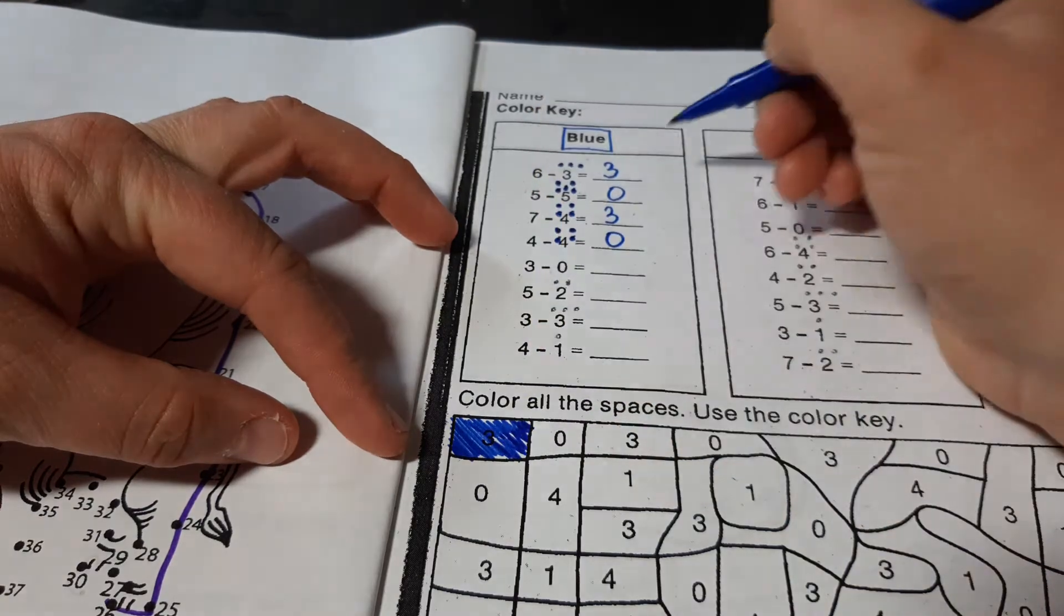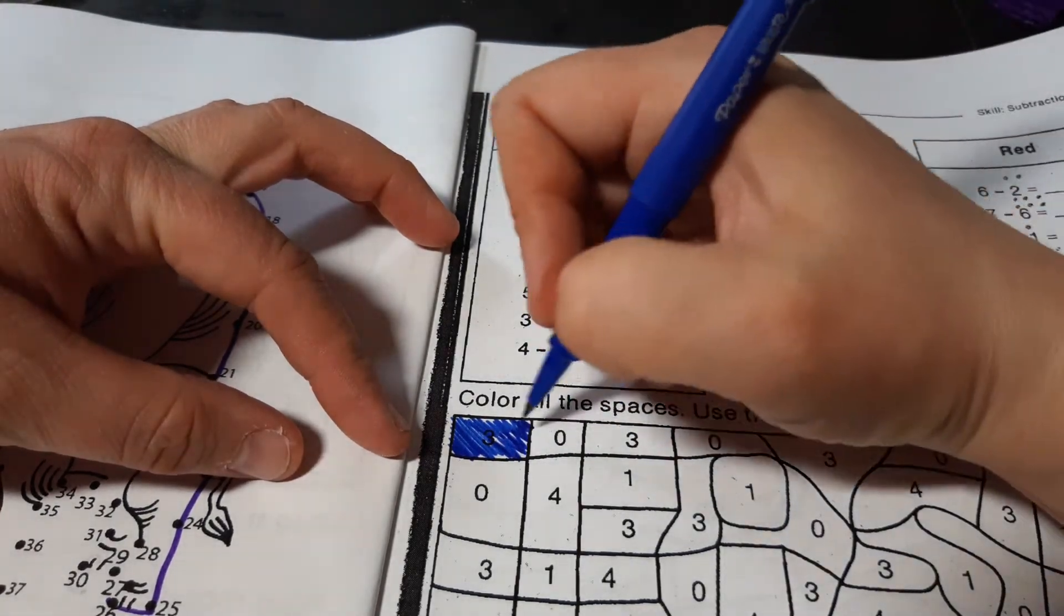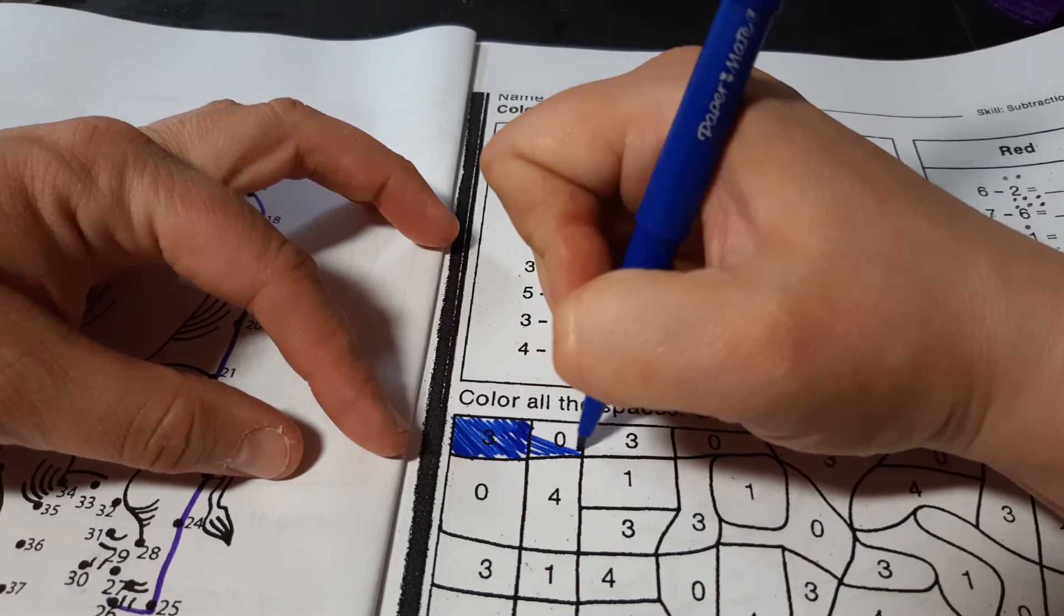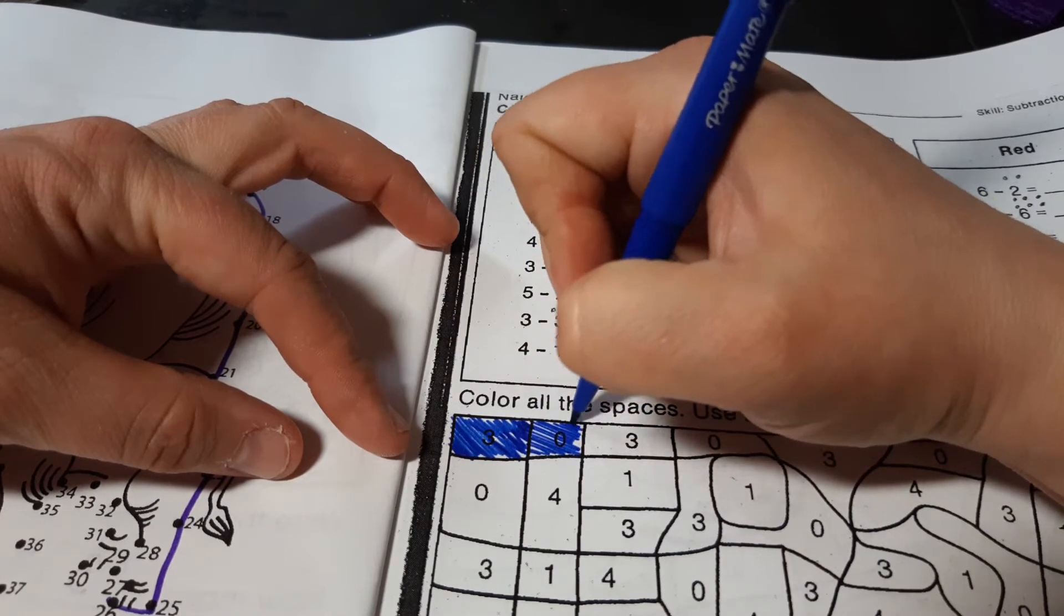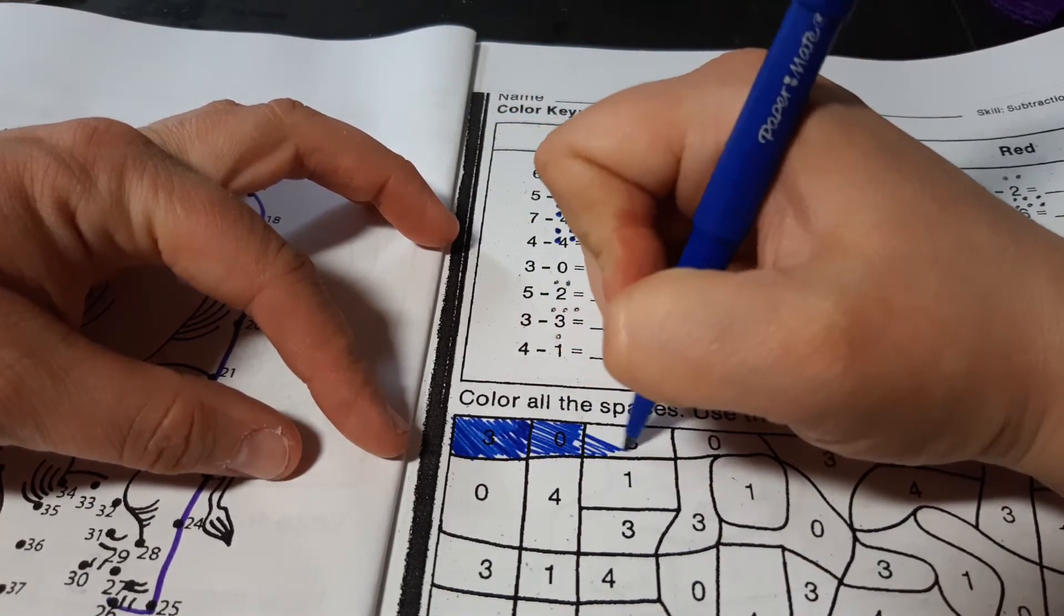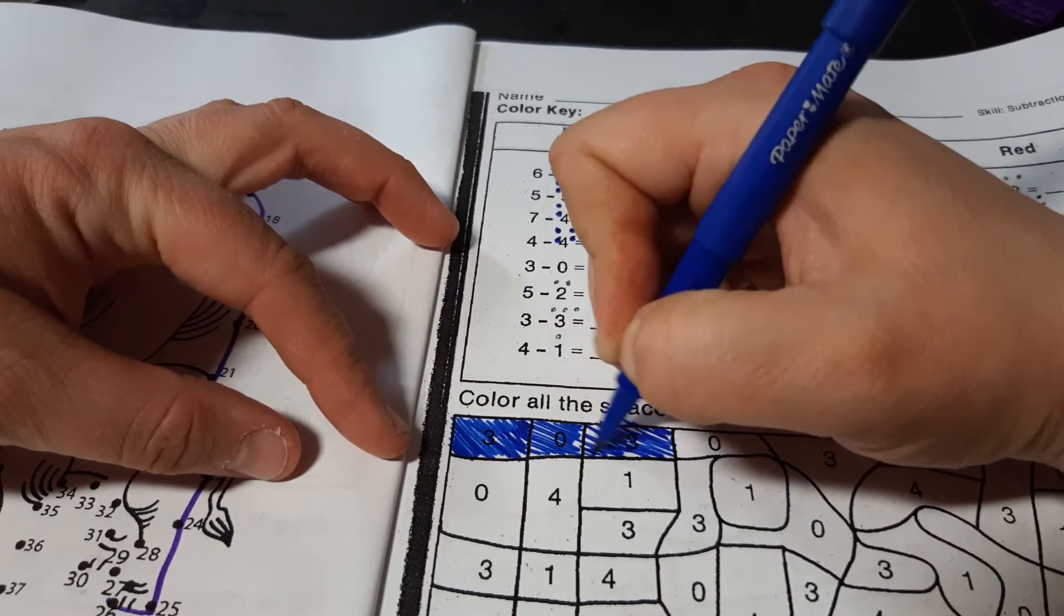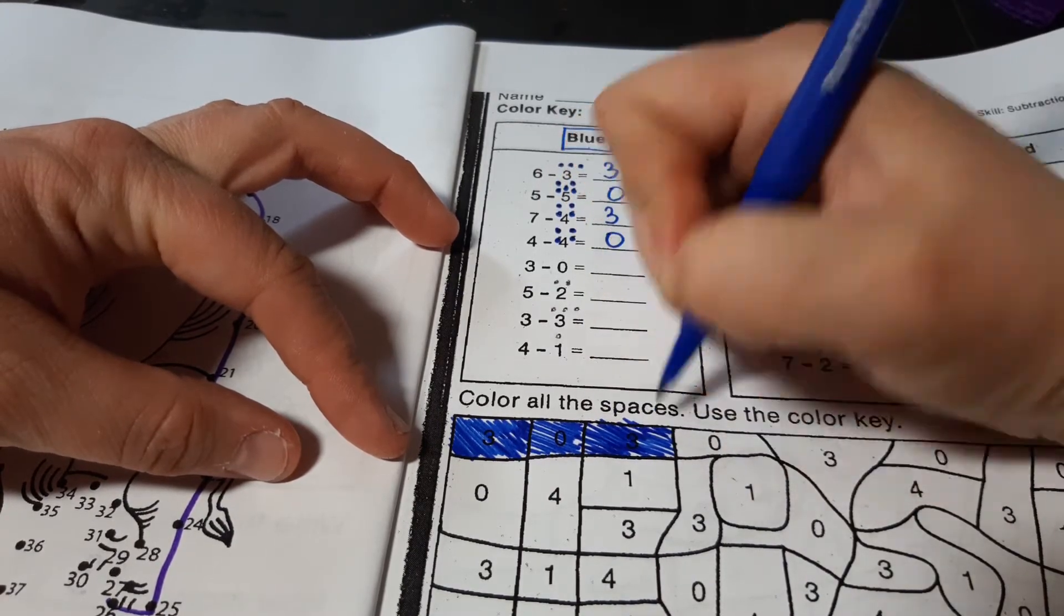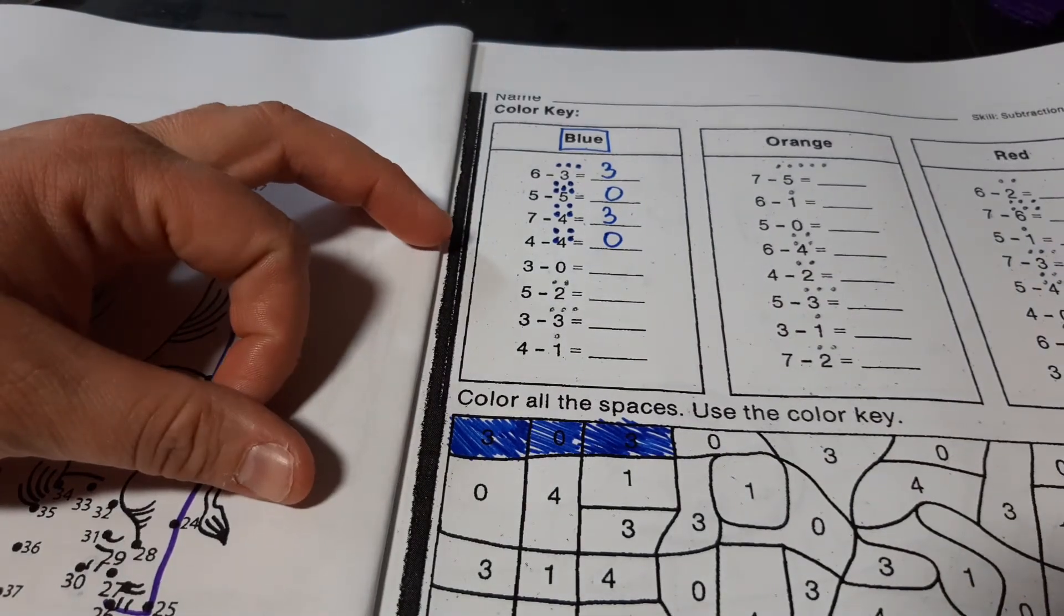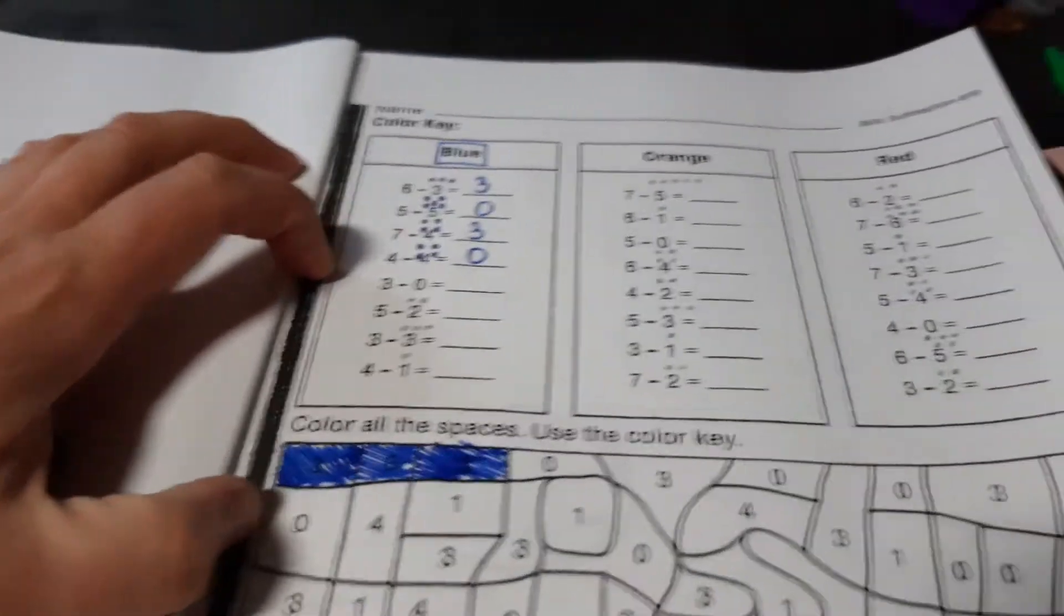Okay. 0 is also blue, so here I'm going to go. And you're going to color in all the blue. Okay. All right.